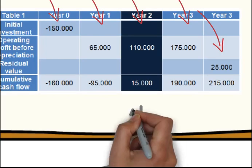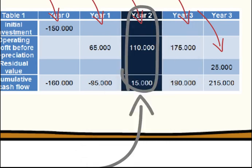So just by looking at the table, we can see that somewhere in the last quarter of year 2 we actually recovered our initial investment.